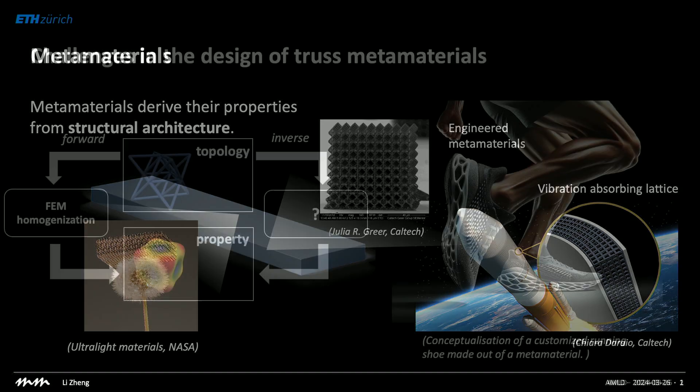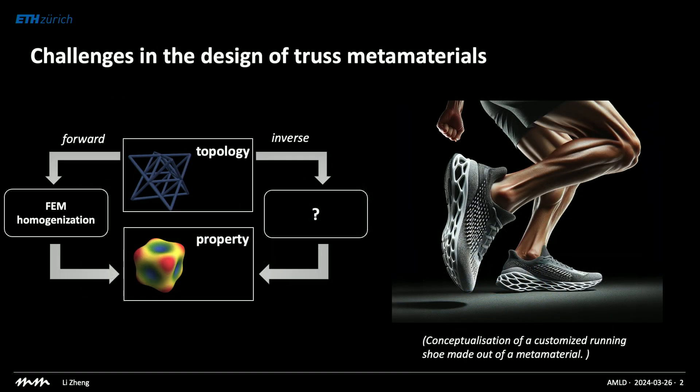The design of these metamaterials involves two challenges. The first is the forward problem: given the structure, what are its properties? The second challenge is inverse design — if we want certain properties, how do we have to make the architecture to achieve them? This can be used, for example, in customized products.